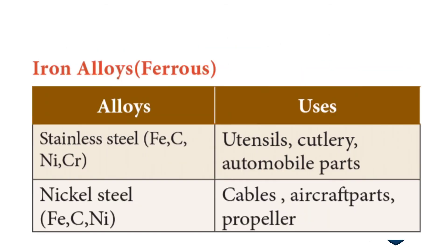Next, iron alloys — the ferrous alloys. Stainless steel contains iron (Fe), carbon (C), nickel (Ni), and chromium (Cr), and is used for making utensils, cutleries, and automobile parts. Nickel steel contains iron (Fe), carbon (C), and nickel (Ni), and is used in the manufacture of cables, aircraft parts, and propellers.